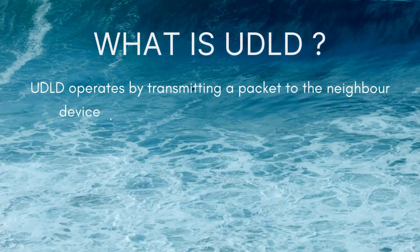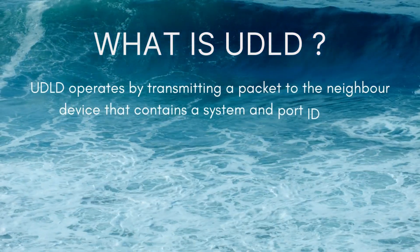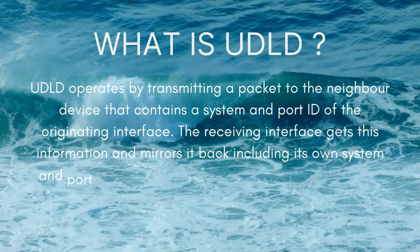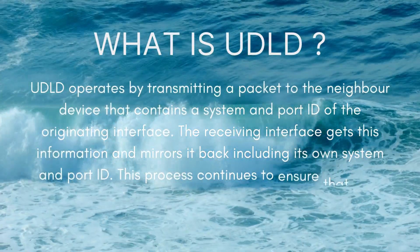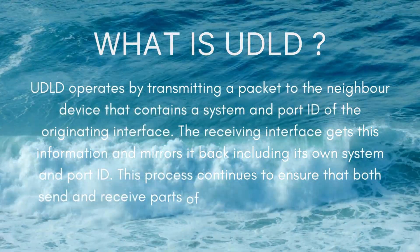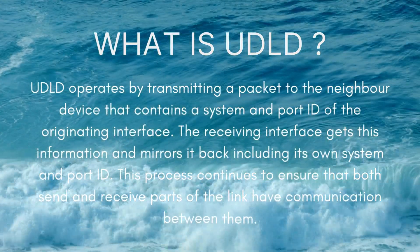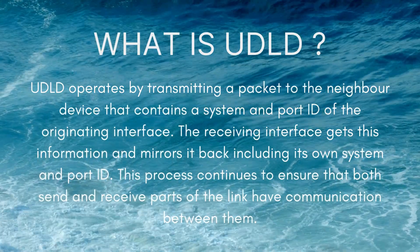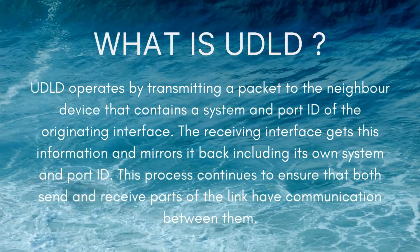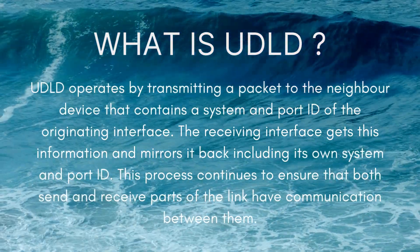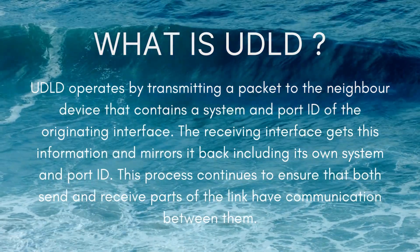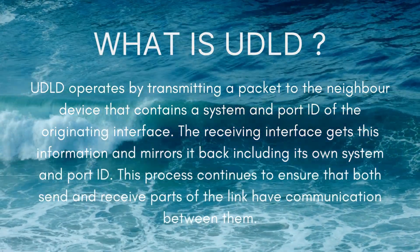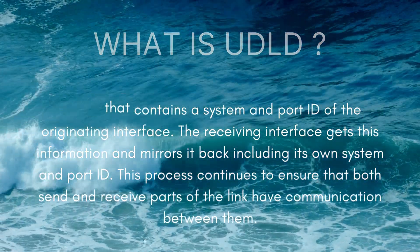UDLD operates by transmitting a packet to the neighbor device that contains a system and port ID of the originating interface. The receiving interface gets this information and mirrors it back, including its own system and port ID. This process continues to ensure that both send and receive parts of the link have communication between them.